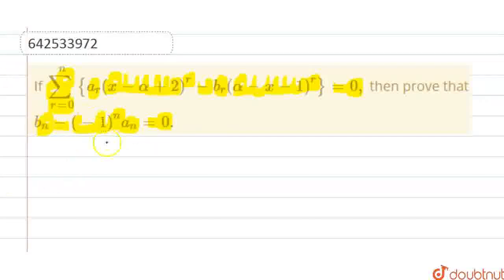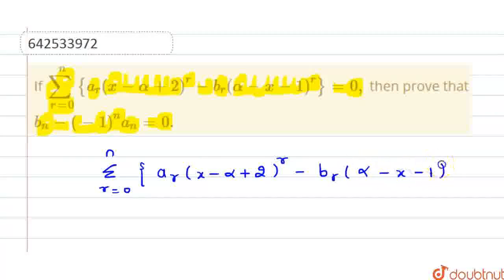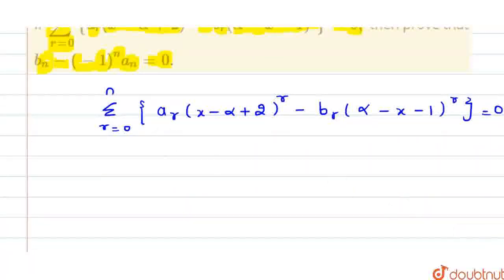First let us write the expression we are given: summation r from 0 to n. This is ar·(x minus alpha plus 2) raised to the power r, minus br·(alpha minus x minus 1) raised to the power r. This summation is given as 0.